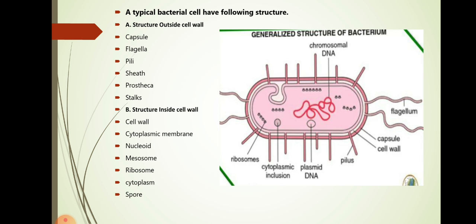A typical bacterial cell have following structures. Structures outside cell wall are capsule, flagella, pili, sheath, prosteca and stalks. Structures inside cell wall: cell wall is followed by cytoplasmic membrane, nucleoid, mesosomes, ribosomes, cytoplasm and spore.